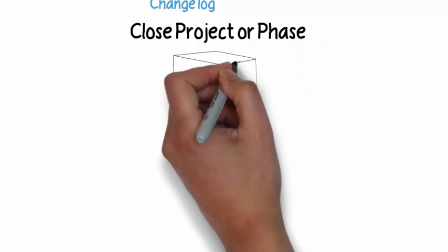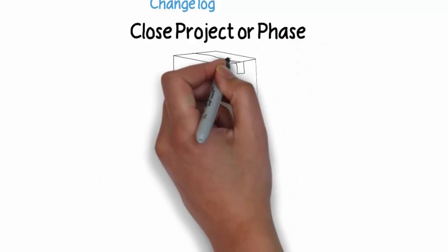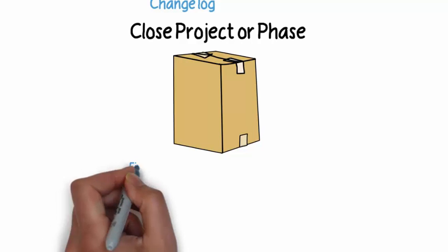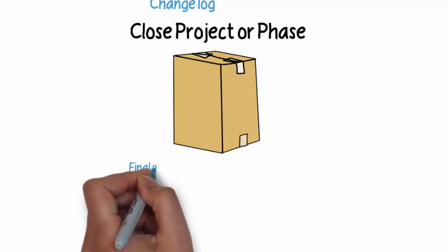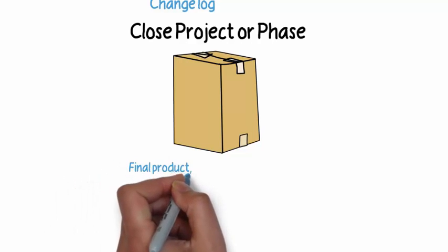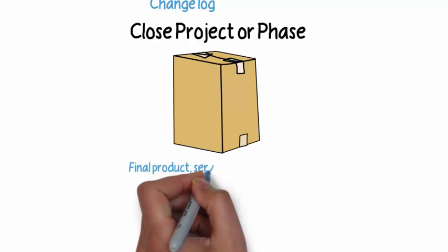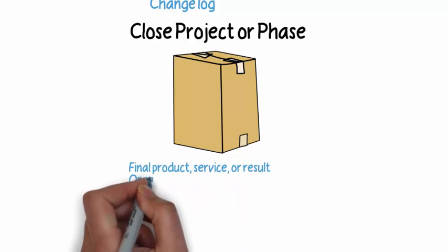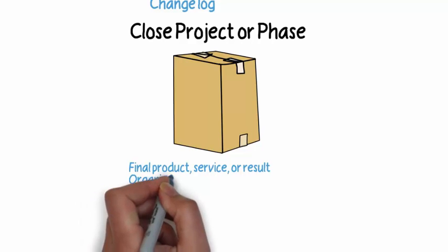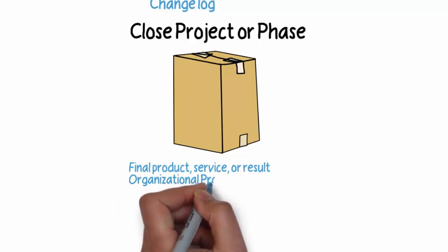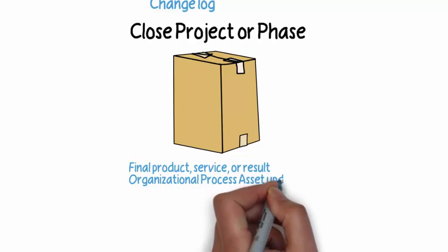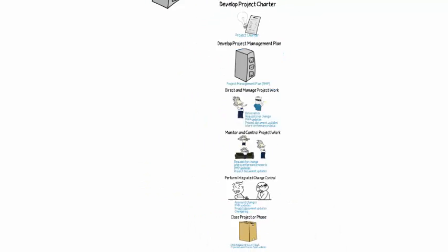The final process in integration management is close project or close phase. These are all the activities necessary to formally close and complete the work. Your outputs are going to be a final product, service, or result — whatever your project or project phase was attempting to accomplish — as well as any updates to the organizational process assets.